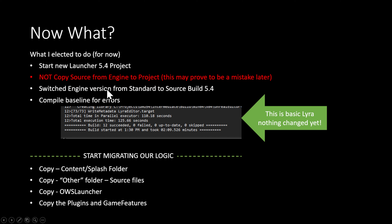I then right-click the .uproject file, change the engine from the standard 5.4 to my source build 5.4, and make sure that Lyra compiles. Up to this point all I've done is compiled basic Lyra code with the source engine - we haven't changed anything yet.